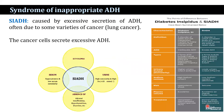The syndrome of inappropriate antidiuretic hormone (SIADH) is caused by excessive secretion of ADH, often due to some varieties of cancer — especially lung cancer, where cancer cells secrete excessive ADH.